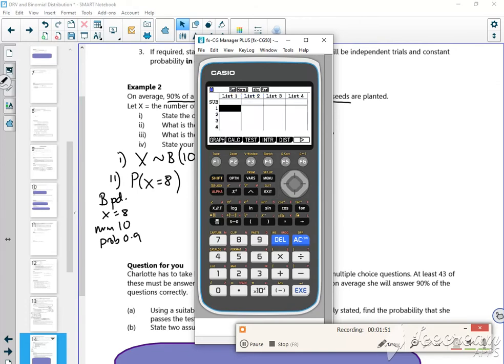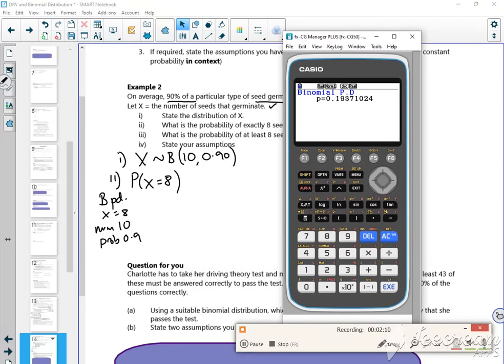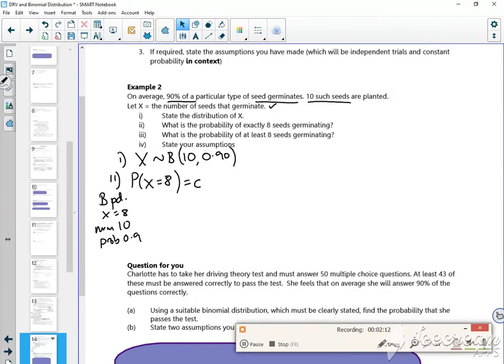So on BPD, the annoying thing of this is you have to go back and press binomial X-wise. So BPD, num trials 8, sorry X 8, oops, num trials 10, and 0.9. There. 0.1937. There.